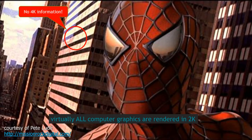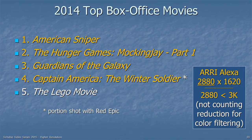Here's another issue with 4K: movies don't necessarily render their computer graphics in 4K — they might be rendering in 2K. And speaking of movies, looking at the top box office movies of 2014, of the top five, one was animated and the other four were shot largely with the Arri Alexa camera. The Arri Alexa has less than 3K resolution, and that's not even counting the reduction for color filtering on a single sensor. So there doesn't seem to be much demand for 4K even in movies.